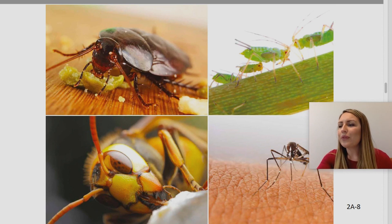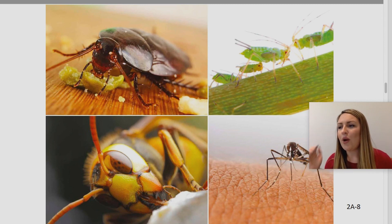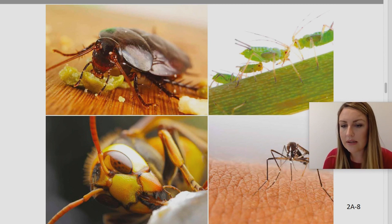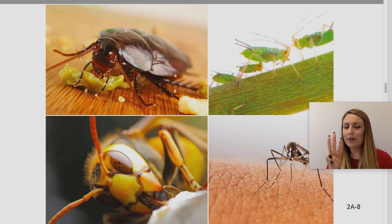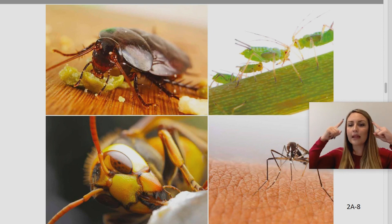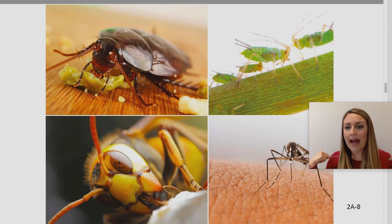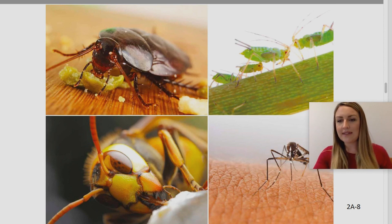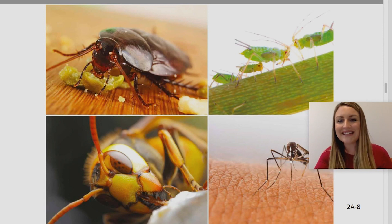What did we learn makes an insect an insect? We know that an insect has three main body parts — can you say them with me? Head, thorax, abdomen. They also have a special kind of skeleton — do you remember what we call that? An exoskeleton! That means they wear their skeletons on the outside of their body like protective coverings.